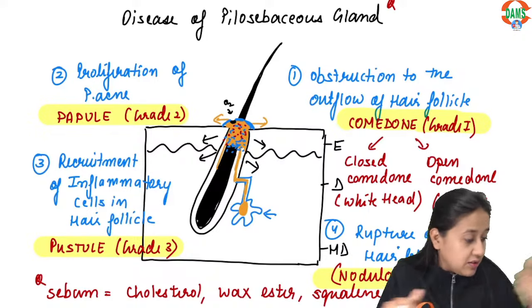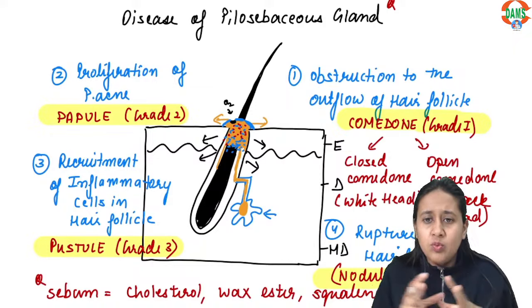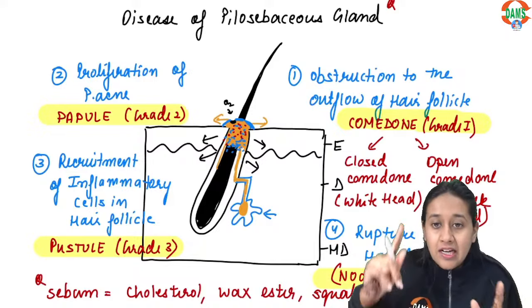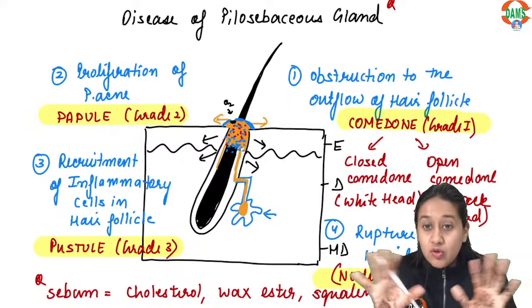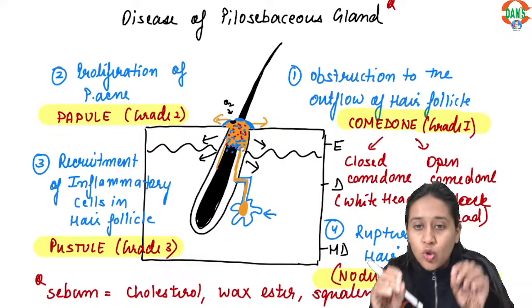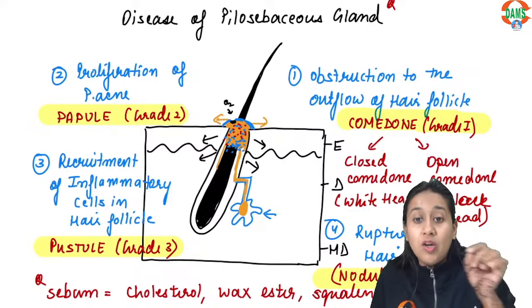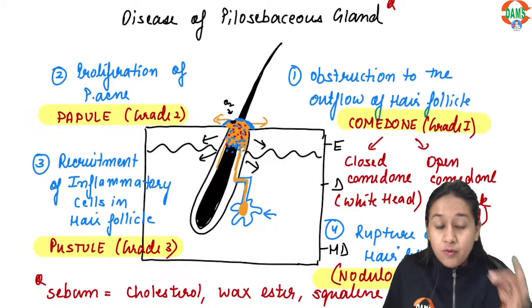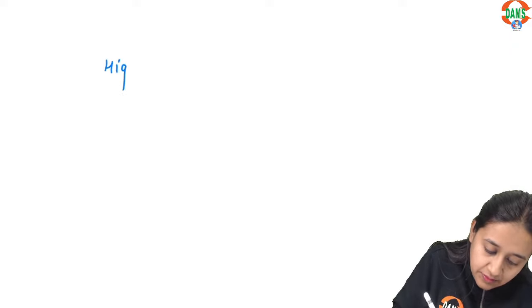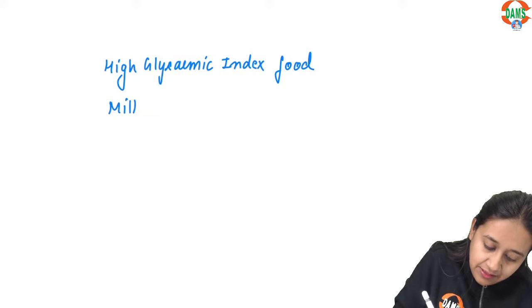Any type of inflammatory cells can collect inside the hair follicle — it is not restricted to neutrophils. Regarding food triggers: oily food is NOT related to acne development — this is a common myth and a previous year MCQ. The foods that actually trigger acne are high glycemic index foods and milk and milk products.